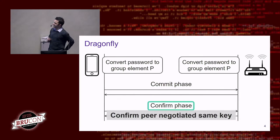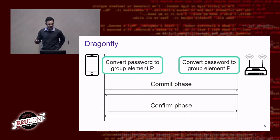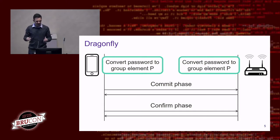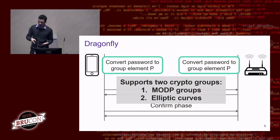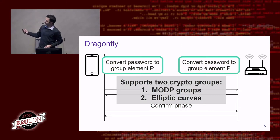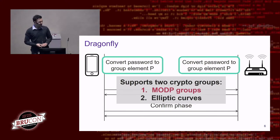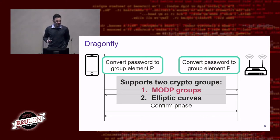The important aspect of the Dragonfly handshake — where most things go wrong — is how the password is converted into a group element. The Dragonfly handshake can be executed using two different cryptographic groups: the first is called modP groups and the second is called elliptic curves. I'll briefly introduce both and explain for each how this algorithm converts the password into group element P.